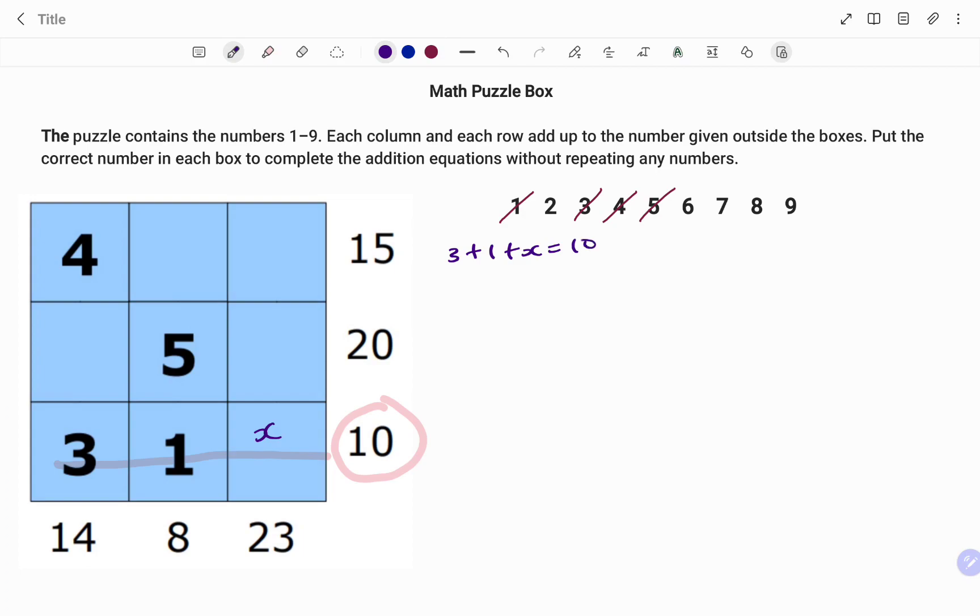I have four plus x equals to ten. That's three plus one. And using the balance method, I'm going to take out four from both sides. So what I'm left with is four minus four is zero, then I'm left with x equals to ten minus four, six. So therefore I'm going to replace my x with six.